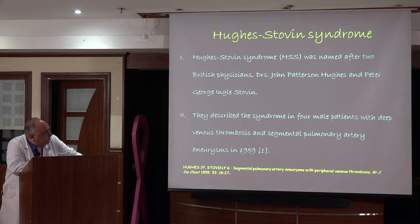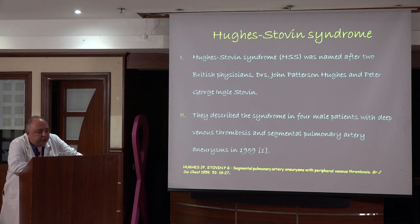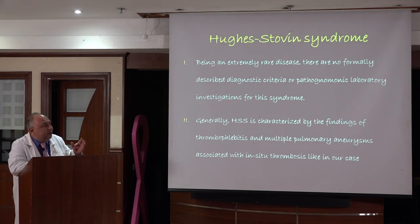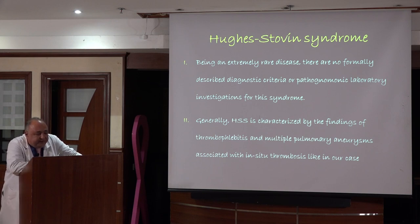Hughes-Stovin syndrome was named after two British physicians — Dr. John Hughes and Peter Stovin — who in 1959 described four male patients with deep venous thrombosis and segmental pulmonary artery aneurysm. This was the first report describing such an association. It is considered an extremely rare disease, but I'm not sure whether it is truly rare or whether there is a failure of clinical recognition. We should look at patients who develop DVT with pulmonary manifestations to determine if they have thromboembolic disease or this syndrome, because the treatment differs.